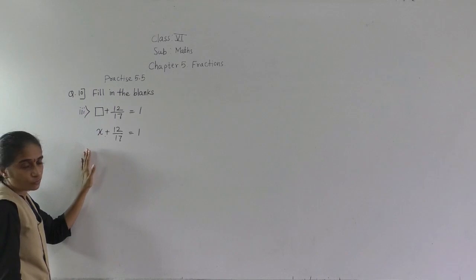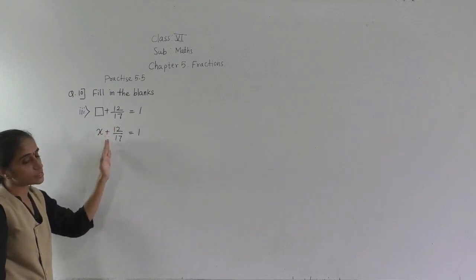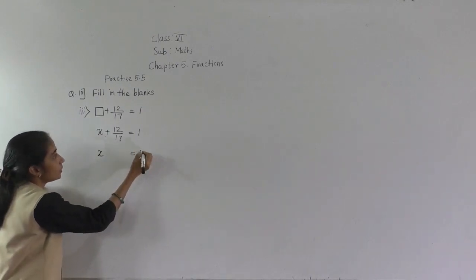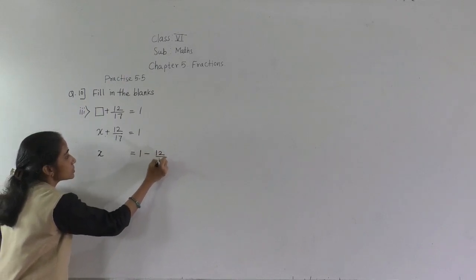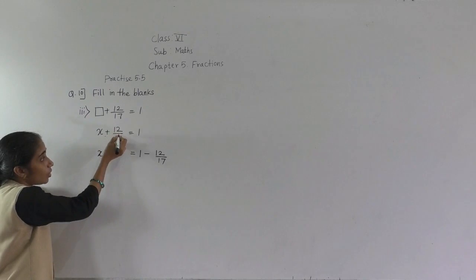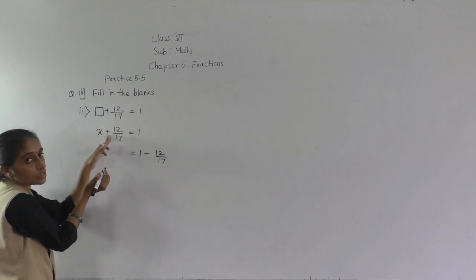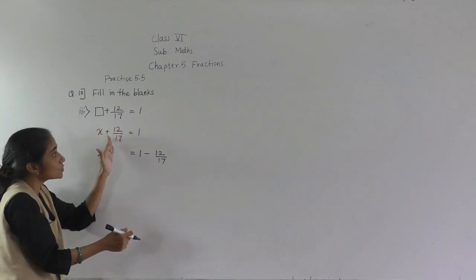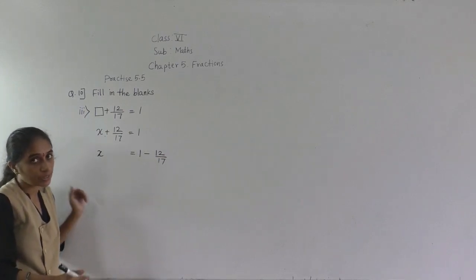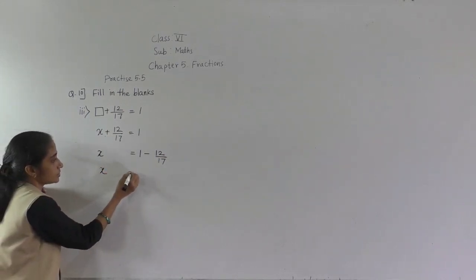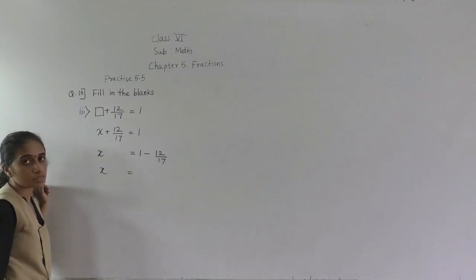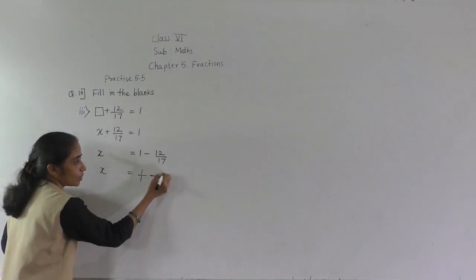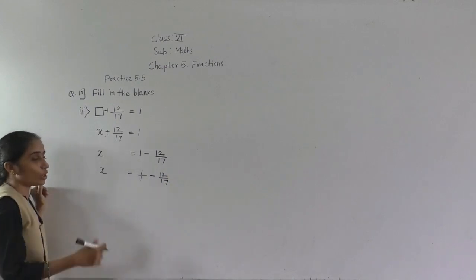We have to find the value of x. 12 upon 17 is here plus. If we transfer it to the other side, then it will become minus. So x is equal to 1 minus 12 upon 17. For the number 1, there is no denominator, which means the denominator is 1. So x equals 1 upon 1 minus 12 upon 17.